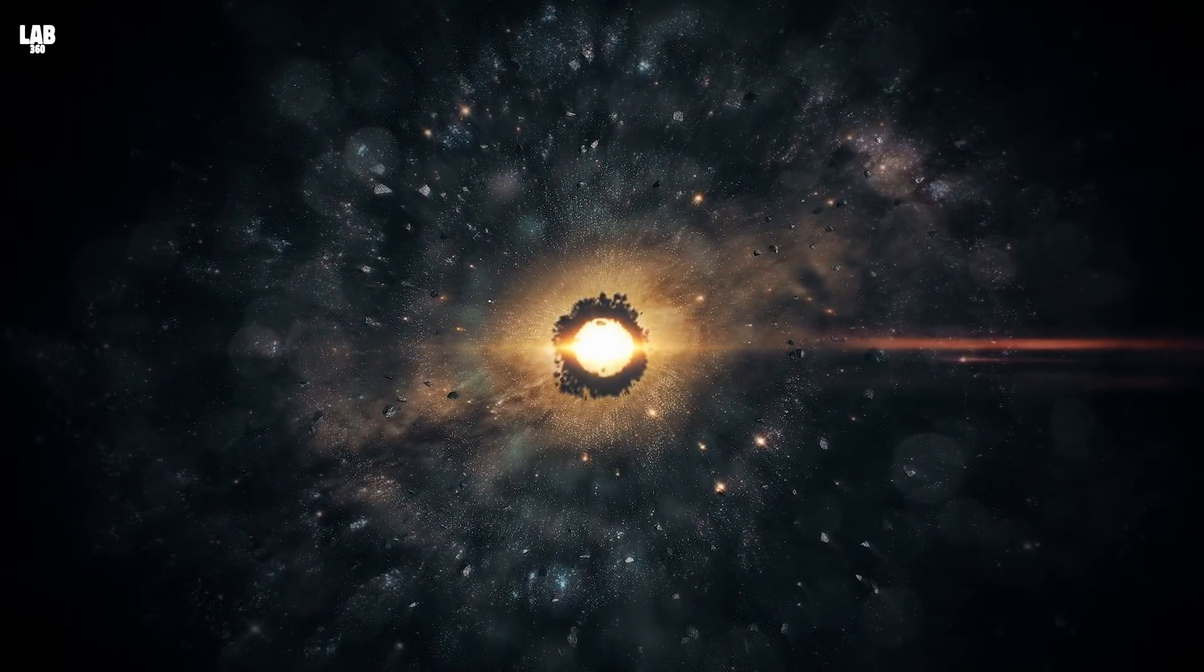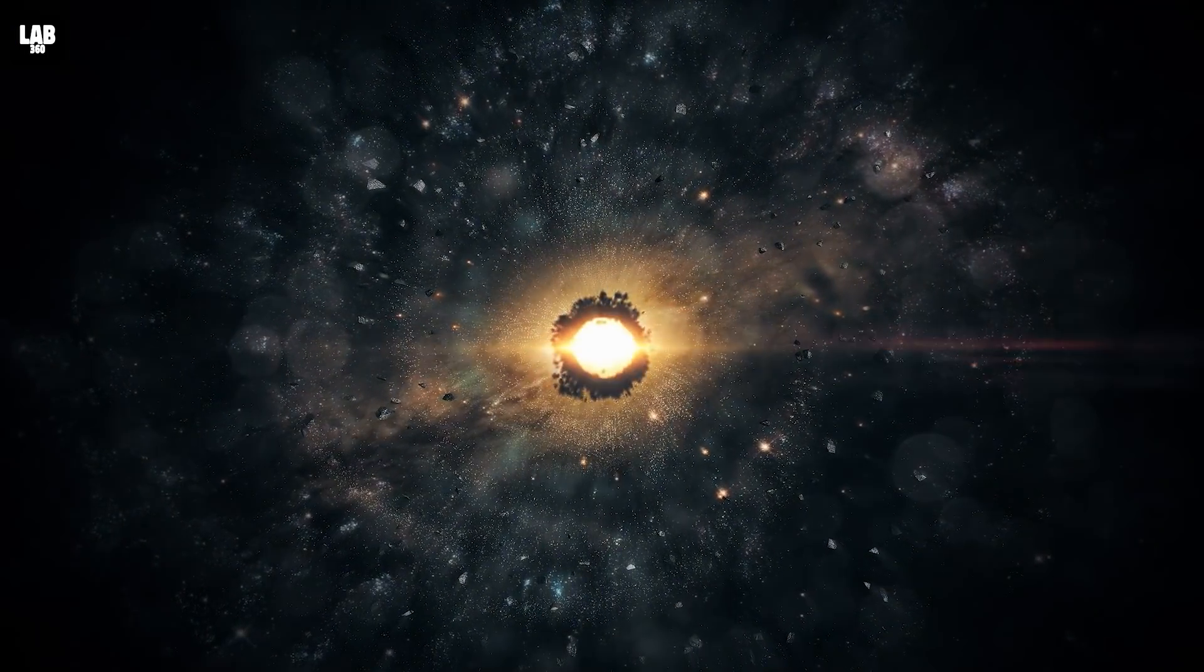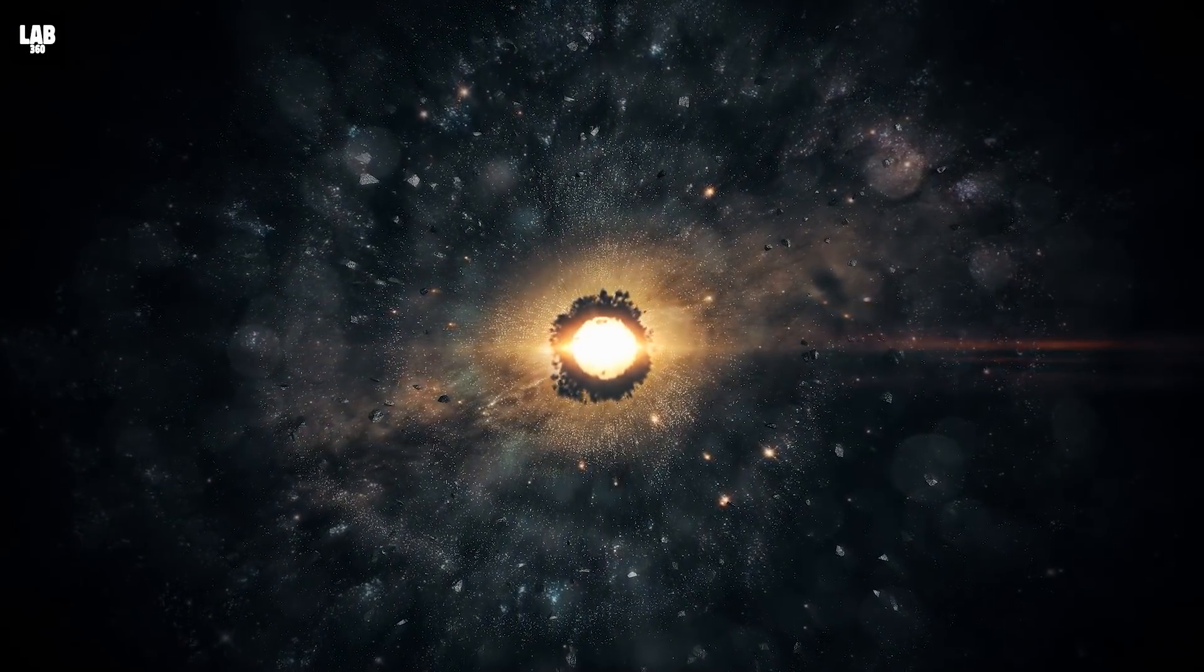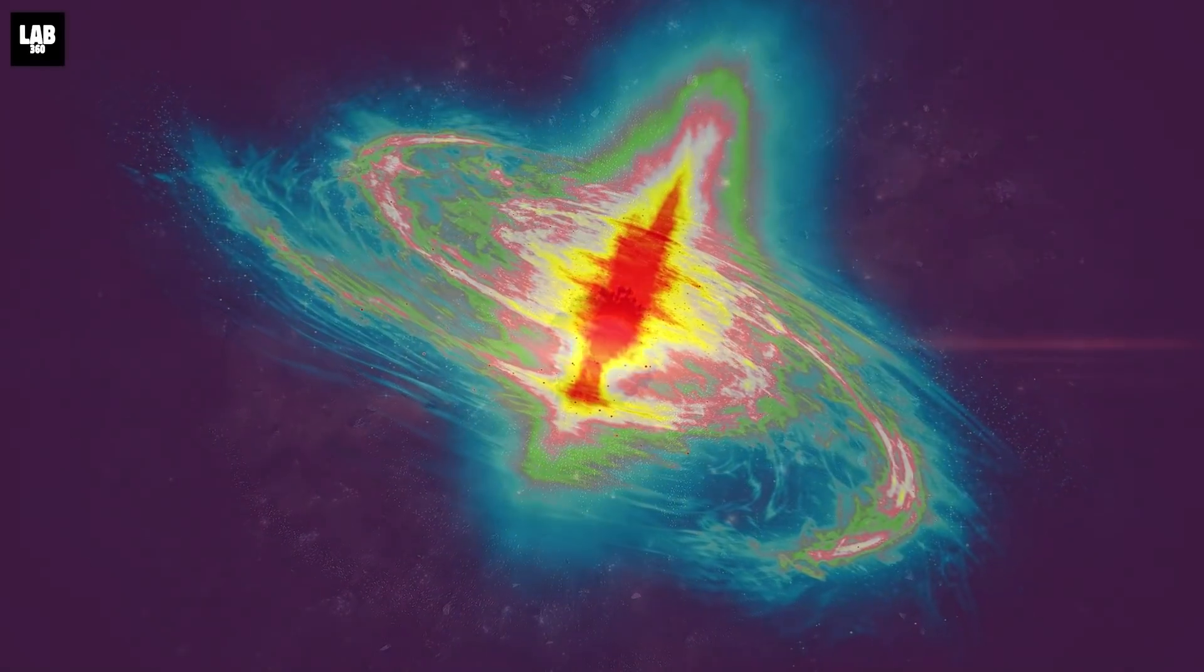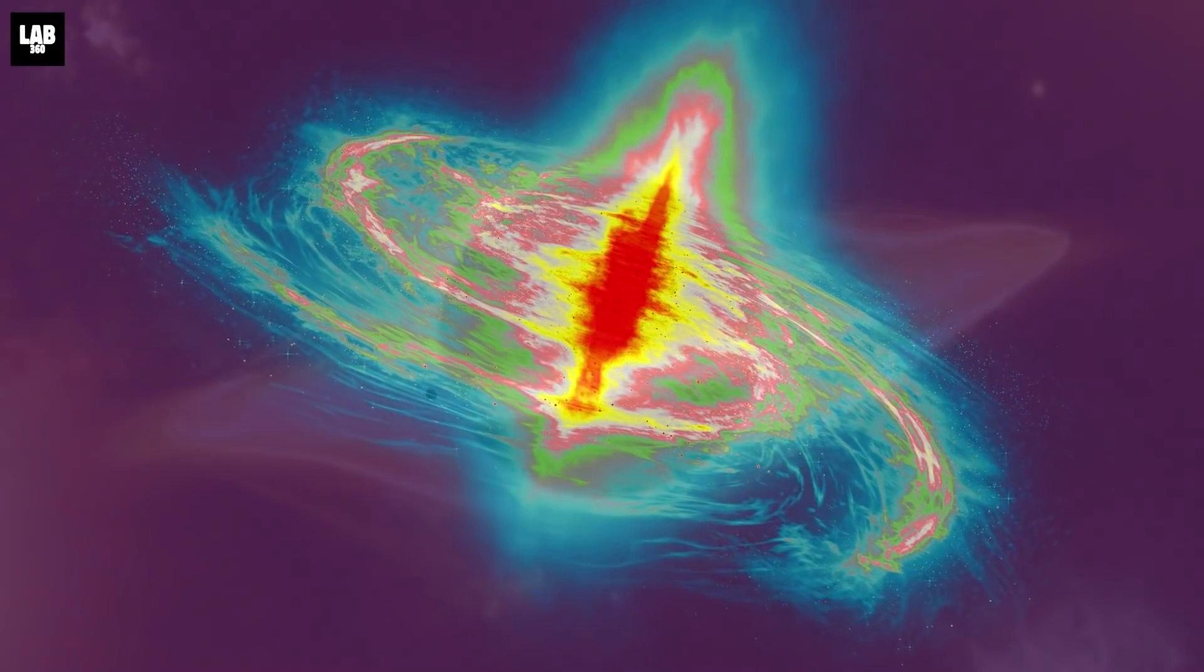GNZ-7Q's host galaxy is forming stars at the rate of 1,600 solar masses per year, and GNZ-7Q itself appears bright at UV wavelengths but very faint at X-ray wavelengths.